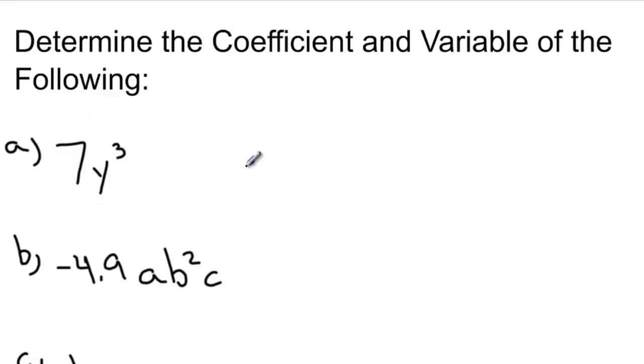So my first term is 7y to the exponent 3. That would mean that 7 is the coefficient and y to the exponent 3 is the variable.